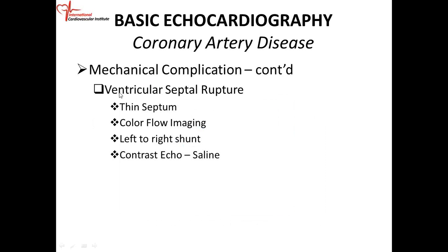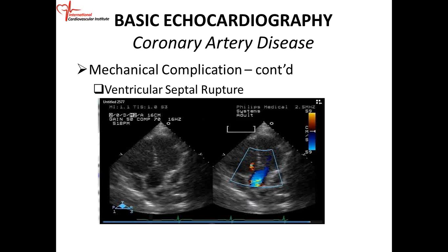They may have a ventricular septal rupture and will present with a VSD. When you look at the area of the rupture, the septum is going to be thin. You'll see color flow across the septum — it's usually left to right because of the pressure difference. Using contrast with saline can also help pick it up. In the four-chamber or five-chamber view, you can see flow from left to right in the paramembranous area — that's the VSD.